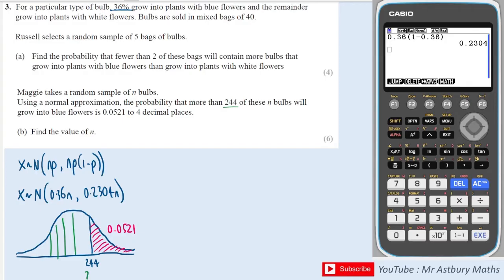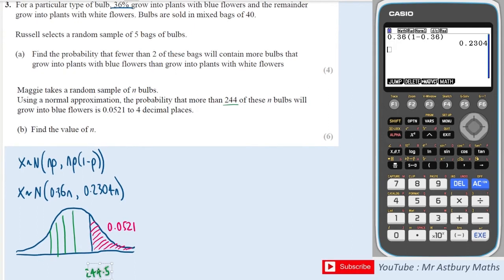Well the answer to that is 244.5 because any less than that it would round down to 244 which is not what we want because we want more than 244, and anything more than that would round to more than 244. So that's the number that we're going to have to use.